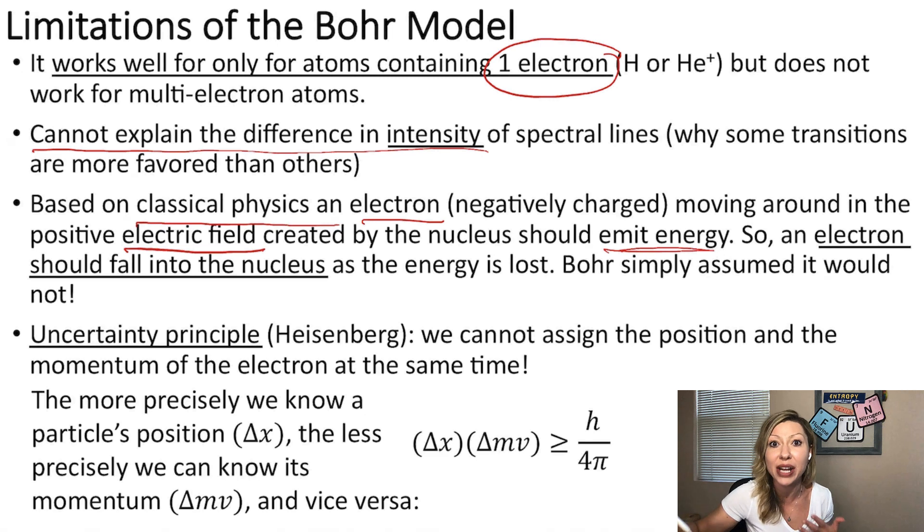Because it is emitting energy constantly. But it doesn't happen. We know that because atoms are stable. So what did Bohr say about this? He simply assumed that it would not. Why not? It's just a model.